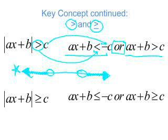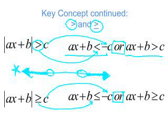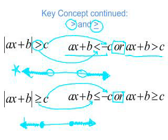If I have the absolute value of ax plus b is greater than or equal to c, I can rewrite that as a compound inequality with the word 'or': ax plus b is less than or equal to negative c, or ax plus b is greater than or equal to c. Again, when I change c to its opposite I have to change the inequality symbol. On the number line, you have two closed (shaded) points — shade to the left of the left point and to the right of the right point.